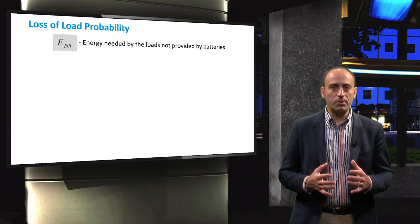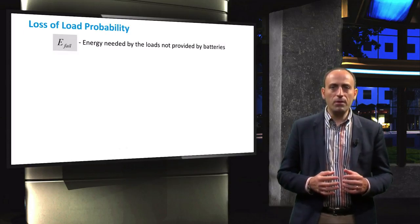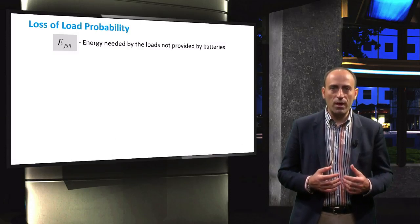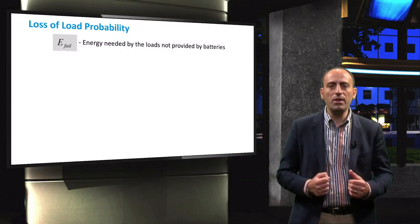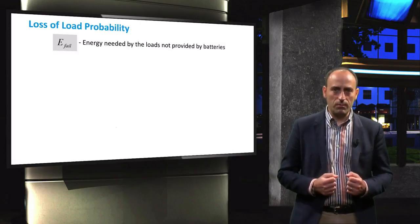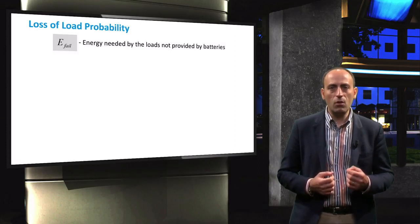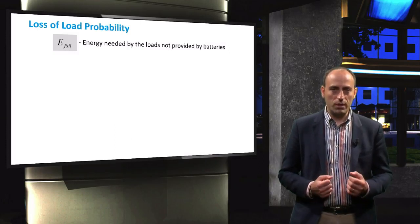Let's first introduce some concepts related to the LLP. The first parameter is E-fail. E-fail is defined as the energy required by the electric load that cannot be delivered by the PV system. This occurs, for example, if there is no energy generation for a period longer than the number of autonomous days.